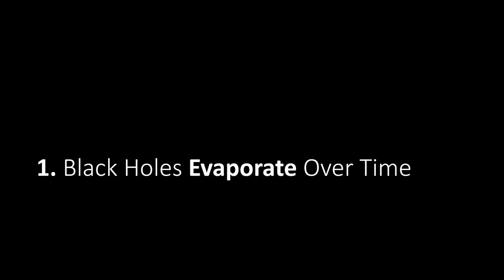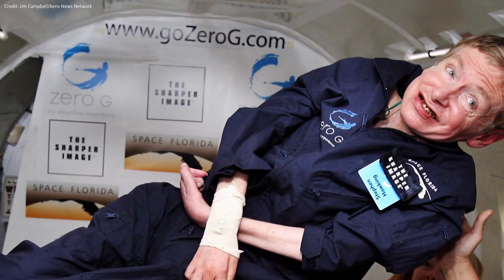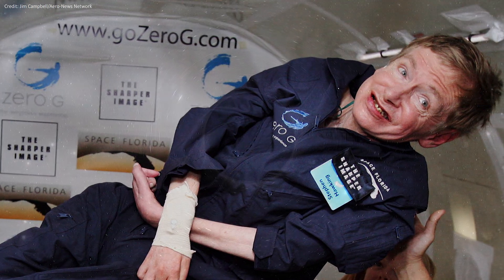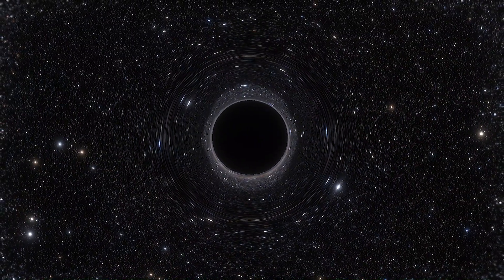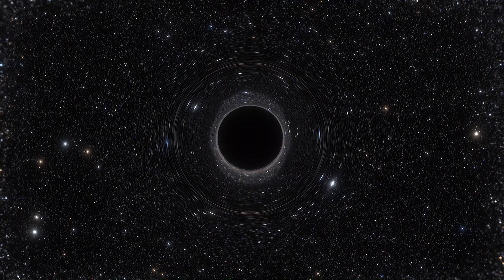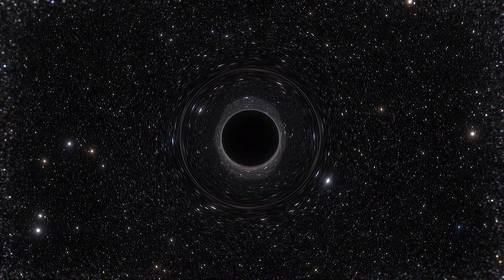However, black holes didn't get their universal name until 1967. Professor Stephen Hawking discovered that black holes evaporate over vast periods of time. The phenomenon is called Hawking radiation. Hawking radiation disperses a black hole's mass into space and will continue to do this until there is nothing left.